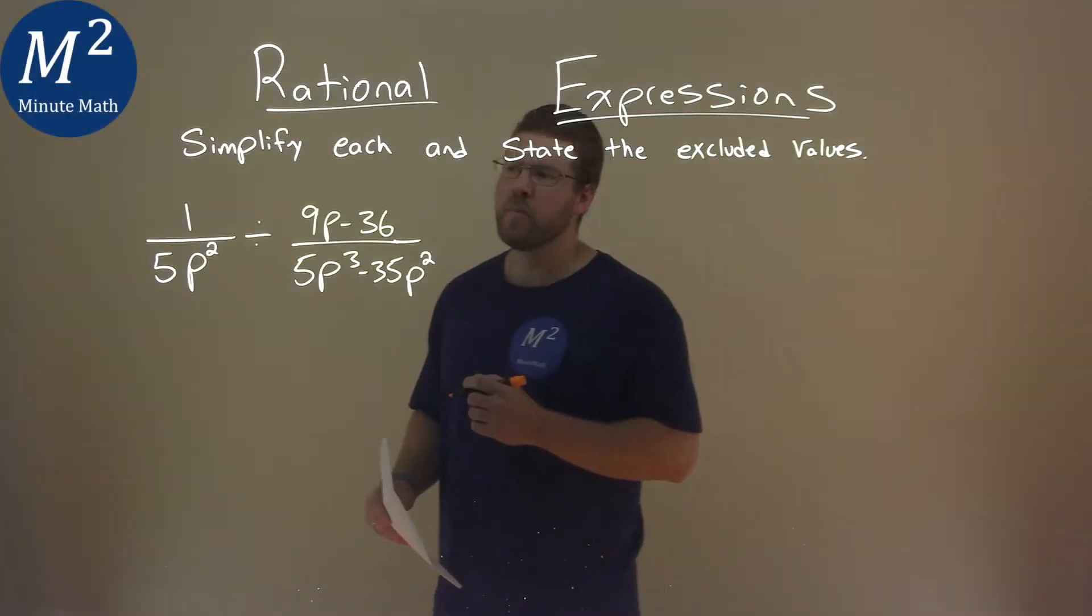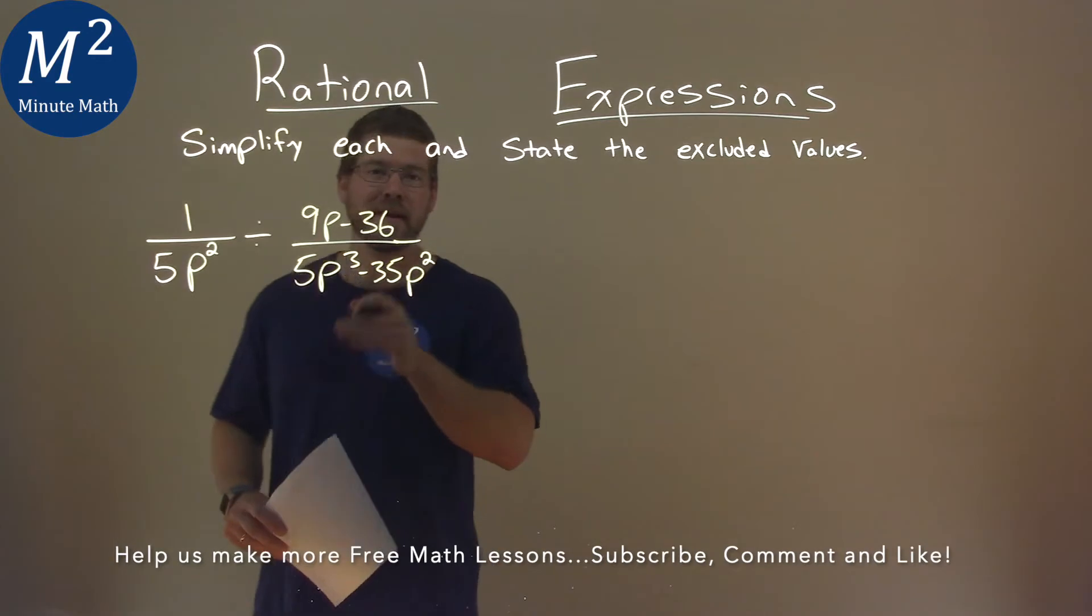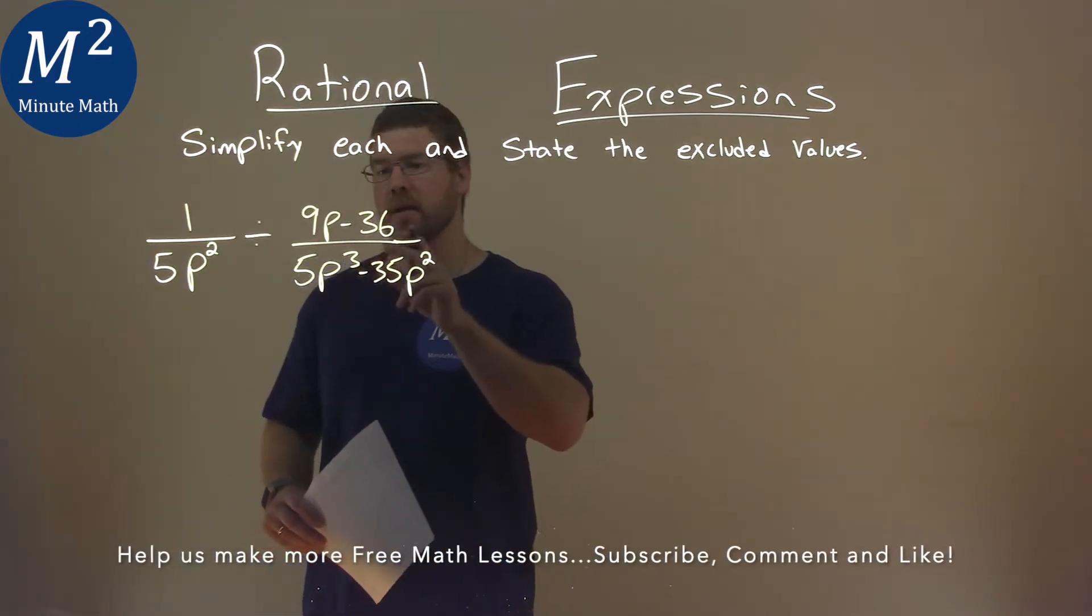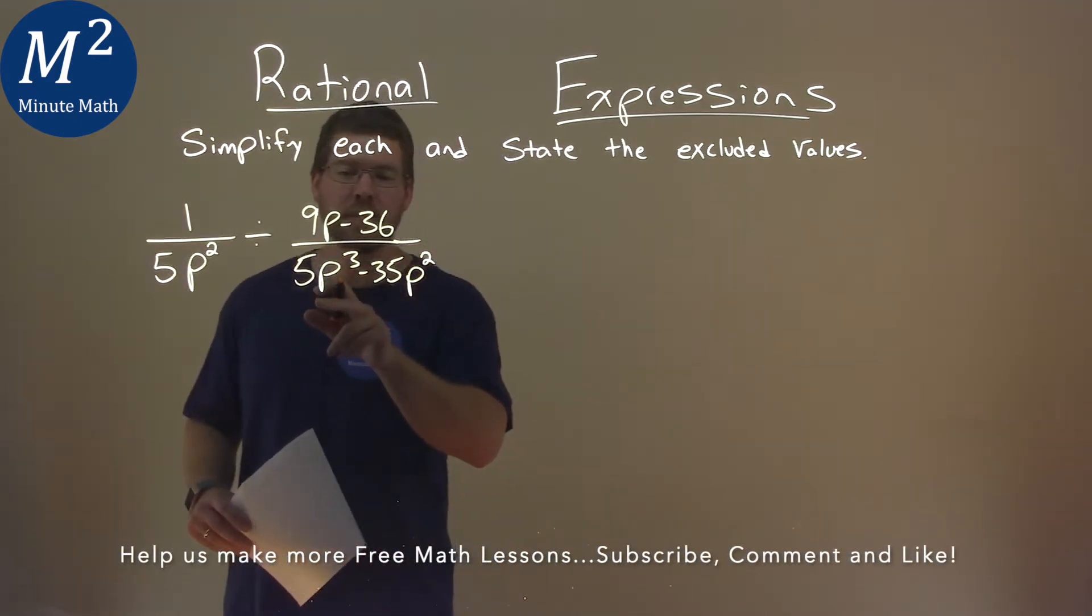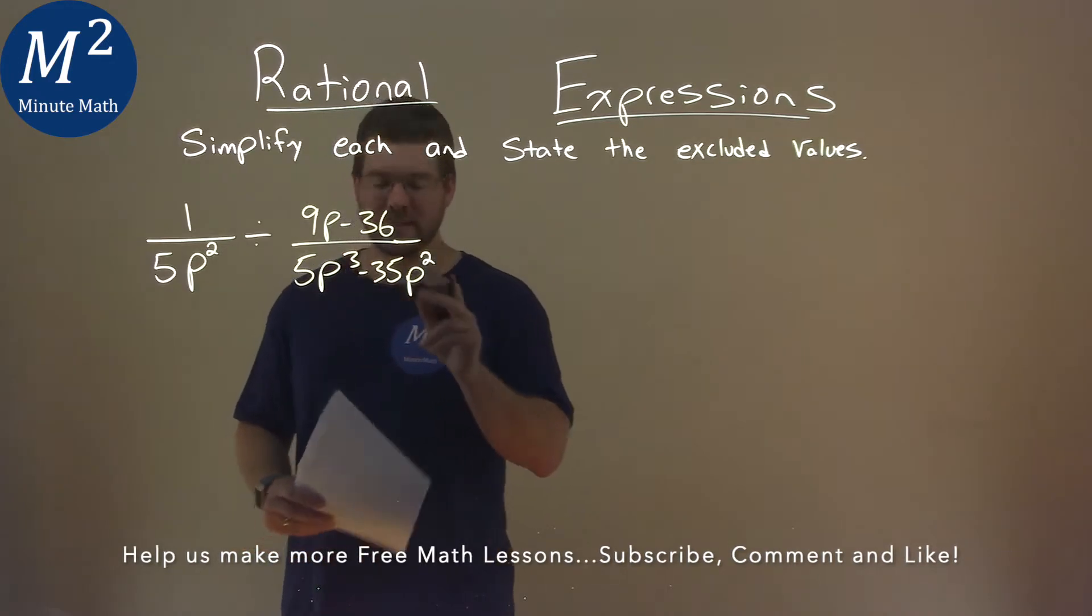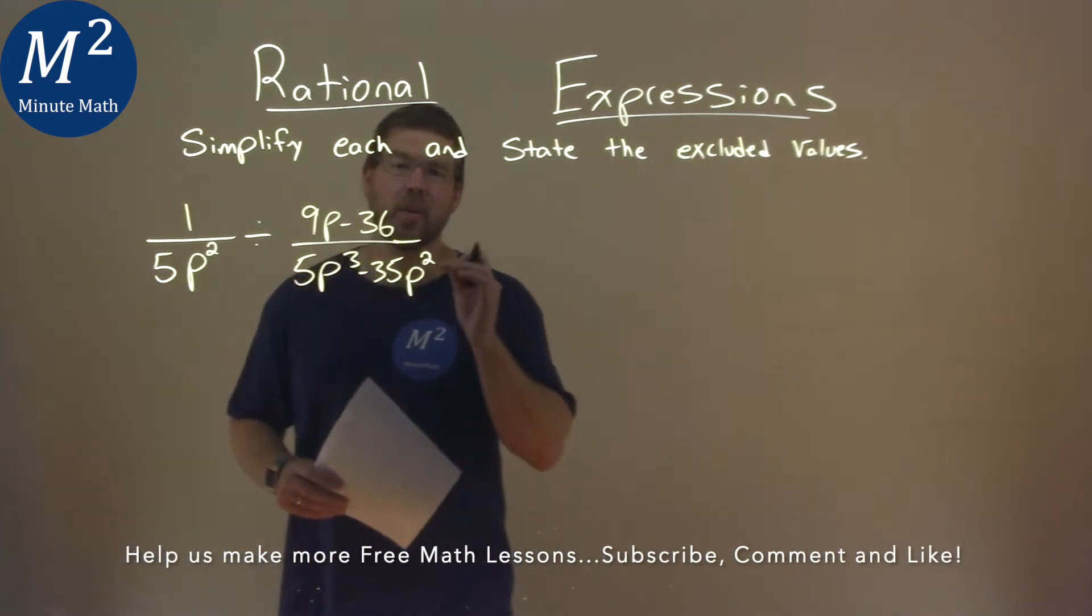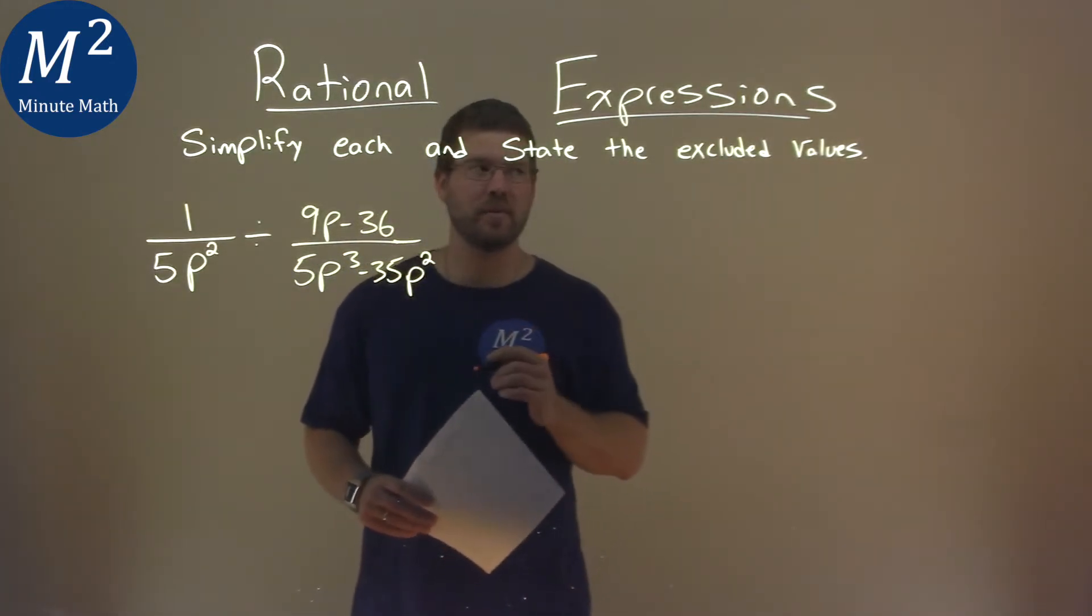We're given this problem right here: 1 over 5p squared divided by 9p minus 36 over 5p to the third power minus 35p squared, and we need to simplify this and state the excluded values.